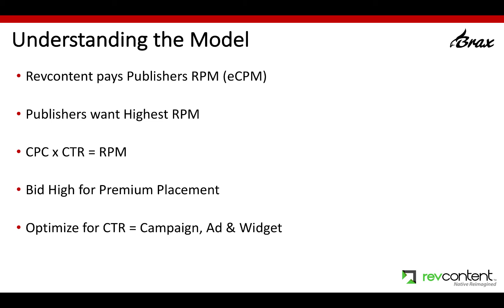If you're a publisher, you want the highest RPM possible because that means you're making the most money from the people visiting your website. In simple terms, the way to understand the CPM or RPM that a publisher is going to get is: it's your CPC, your cost per click that you're bidding, times your CTR. That's the relationship that exists. So if you want to get on premium sites such as Forbes.com, then you need to bid high for that premium placement because they're making a revenue guarantee. Always optimize for click-through rate at the campaign level, the ad level, the widget level, and even the target level.